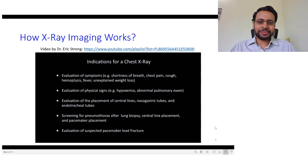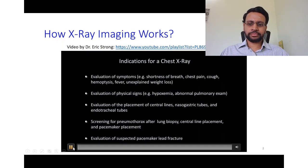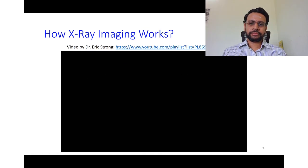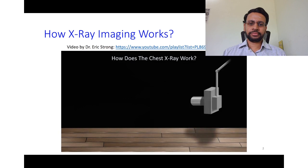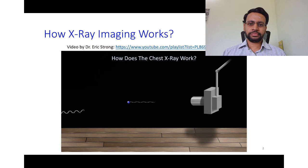How does a chest X-ray actually work? We need a source of X-rays, which are a form of electromagnetic radiation. X-rays are carried by photons, just like visible light, but have higher frequencies and thus higher energies, so they penetrate tissue much better. Unfortunately, these high-energy photons can cause DNA damage leading to cancer, which is why X-ray exposure should generally be limited.